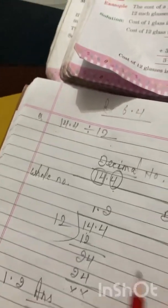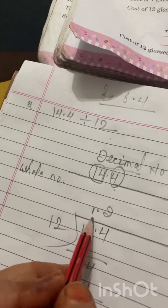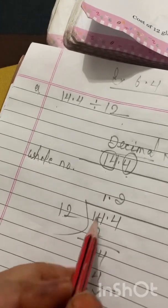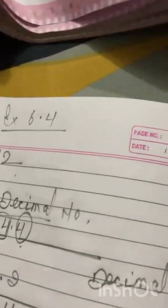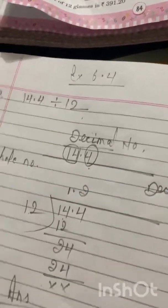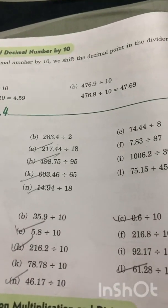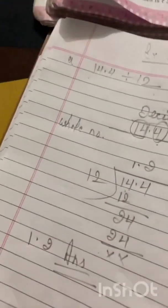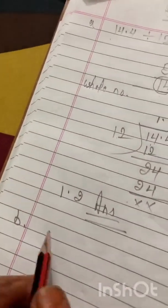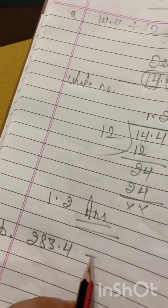When you complete the division of the whole number part, you have to put the decimal in the quotient — this is the main thing to keep in mind. Now come to the next question: question b, 283.4 divided by 2.